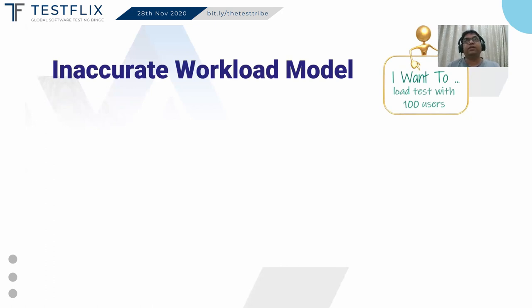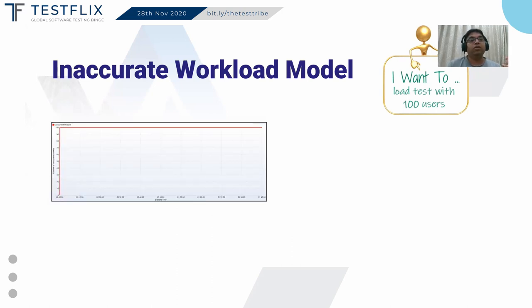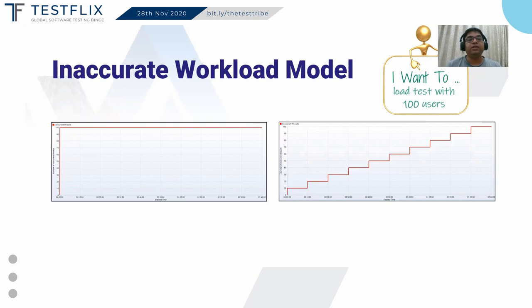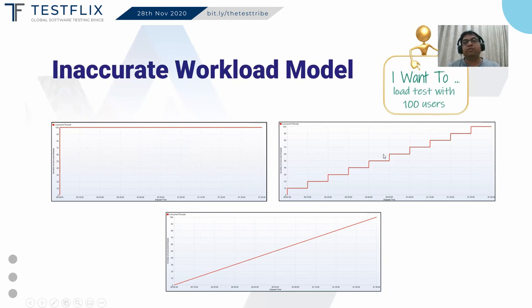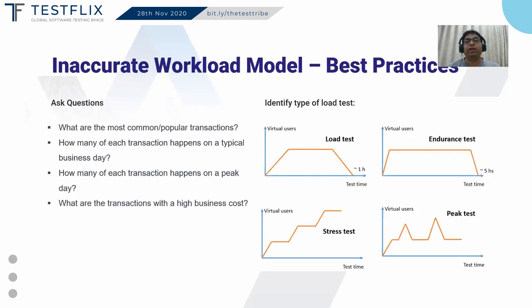Another mistake we do is an inaccurate workload model. Let's say I want to test for 100 users — should I load all hundred users at the very beginning, or should I keep adding users every second? That totally depends. For example, Flipkart has a Big Billion Day sale starting at 12 o'clock, so all users will hit at once — in that case a spike load model is suitable. In another case, a gradual ramp-up model would be appropriate.